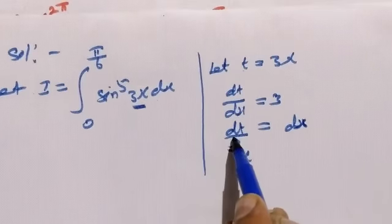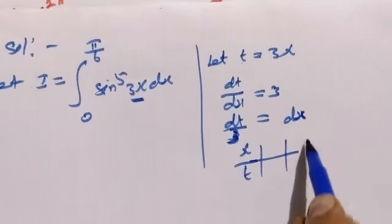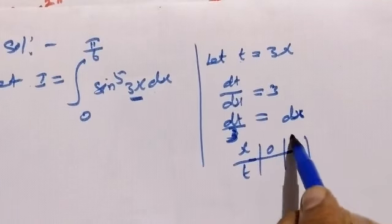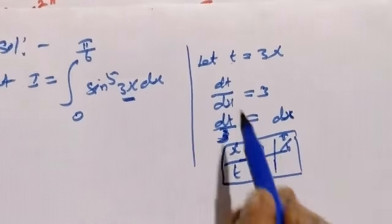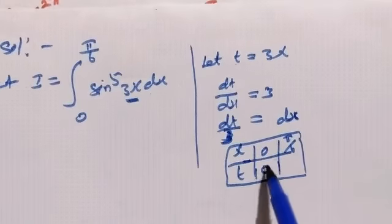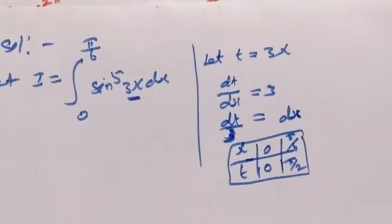Let's change the limits from x to t. When x limit is 0, t equals 3(0) = 0. When x equals 5π/6, t equals 3(5π/6) = 5π/2. So let's substitute x to t in the function.